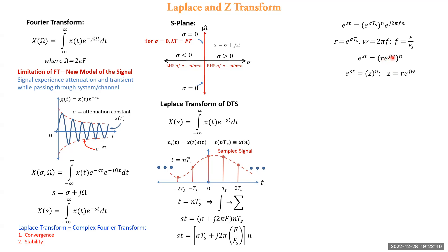Furthermore, r · e^(jω) also forms a complex term which is mathematically represented as z. Therefore e^(st) becomes z^n, where z = r · e^(jω). Here we come across a new variable z which represents the z-plane, also a complex plane. The Laplace transform equation becomes X(z) equal to a summation with limits from minus infinity to plus infinity, since t varies from minus infinity to plus infinity and therefore n also varies from minus infinity to plus infinity. x(t) becomes x(n) and e^(−st) becomes z^(−n).